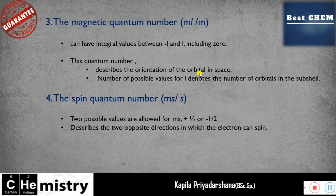Moving to the spin quantum number ms: two possible values are allowed for ms — plus one-half or minus one-half. This quantum number describes the two opposite directions in which the electron can spin. Keep these points in mind very well.